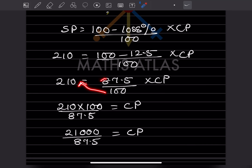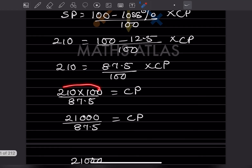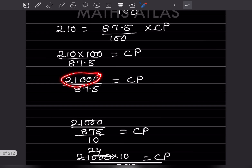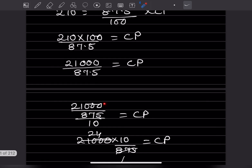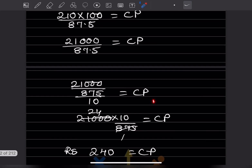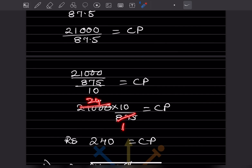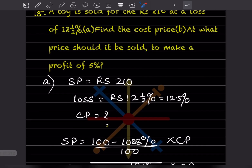Solving for CP: CP = 210 × 100 ÷ 87.5 = 21,000 ÷ 87.5. Writing 87.5 as 875/10, we get CP = 21,000 × 10 ÷ 875 = 240. The cost price is rupees 240.